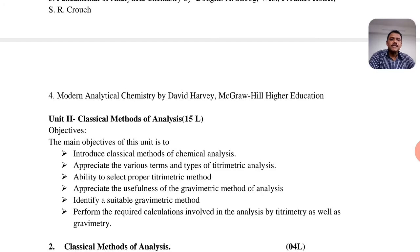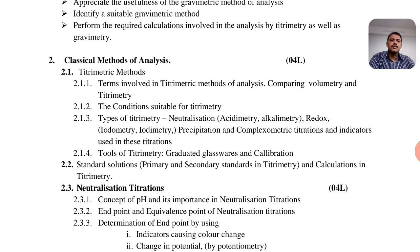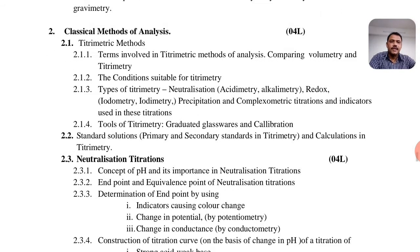The last reference book is Modern Analytical Chemistry by David Harvey, published by McGraw-Hill Higher Education. Unit 2 covers the classical methods of analysis. This unit contains titrometric analysis. We carry out volumetric titrations, known as titrometric methods. It covers the terms involved, comparing volumetry and titrimetry, and the conditions suitable for titrimetry. Types of titrometry include neutralization, acidimetry, alkalimetry, redox (which includes iodometry and iodimetry), precipitation, and compleximetric titrations, as well as the indicators used in volumetric titrations. Also covered are glasswares and their calibration, and standard solutions — both primary and secondary — and calculations in titrimetry.